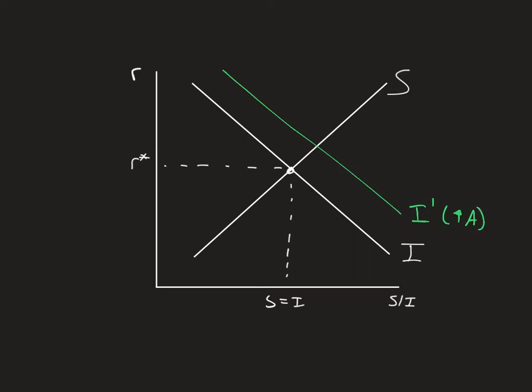But at the same time, we're going to see an increase in government purchases, which means we're running a higher deficit, which means overall savings, because it includes public savings, we will see this is what happens when the government purchases increases holding all else constant, taxes and whatnot.